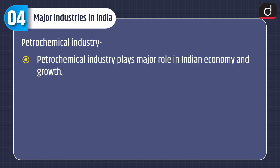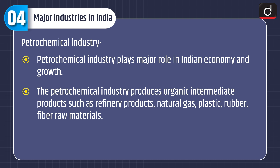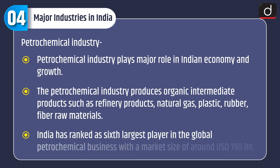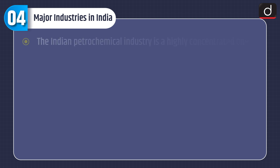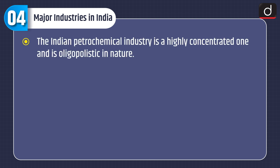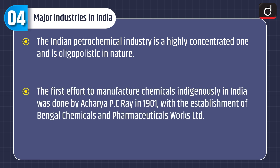Petrochemical industry: Petrochemical industry plays a major role in the Indian economy and growth. It produces organic intermediate products such as refinery products, natural gas, plastic, rubber, fiber, and raw materials. India is ranked as the sixth largest player in the global petrochemical business with a market size of around 190 billion US dollars. The Indian petrochemical industry is highly concentrated and oligopolistic in nature. The first effort to manufacture chemicals indigenously in India was done by Acharya P.C. Ray in 1901 with the establishment of Bengal Chemicals and Pharmaceuticals Works Limited.